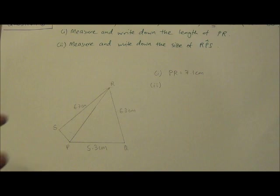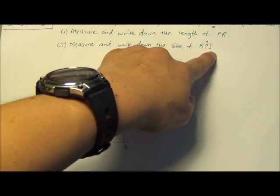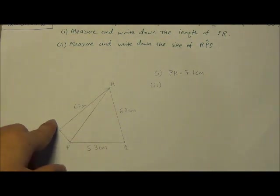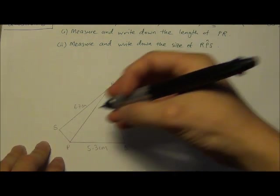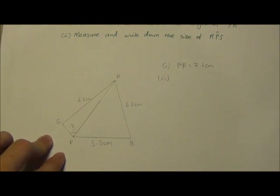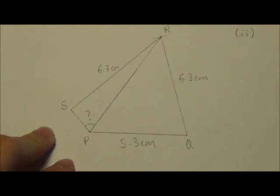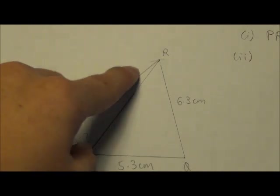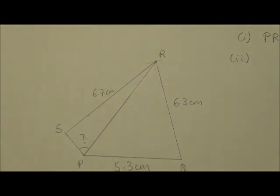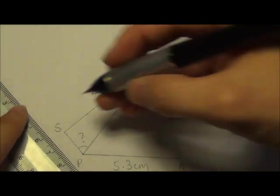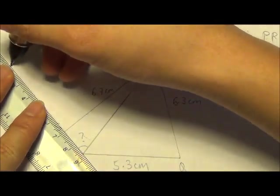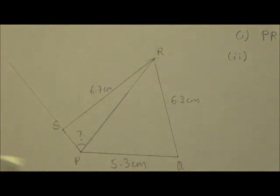So for part two, measure and write down the size of angle RPS. Angle RPS will be over here. So I'm going to find what is this angle. This angle is unknown to me and what I'm going to find. So let me zoom into it. Let's take a closer look. RPS. So over here I have line R and P. But PS is a bit short. So what I'm going to do is I'm going to extend it slightly, such that it will be longer so that I can measure my angle more accurately.